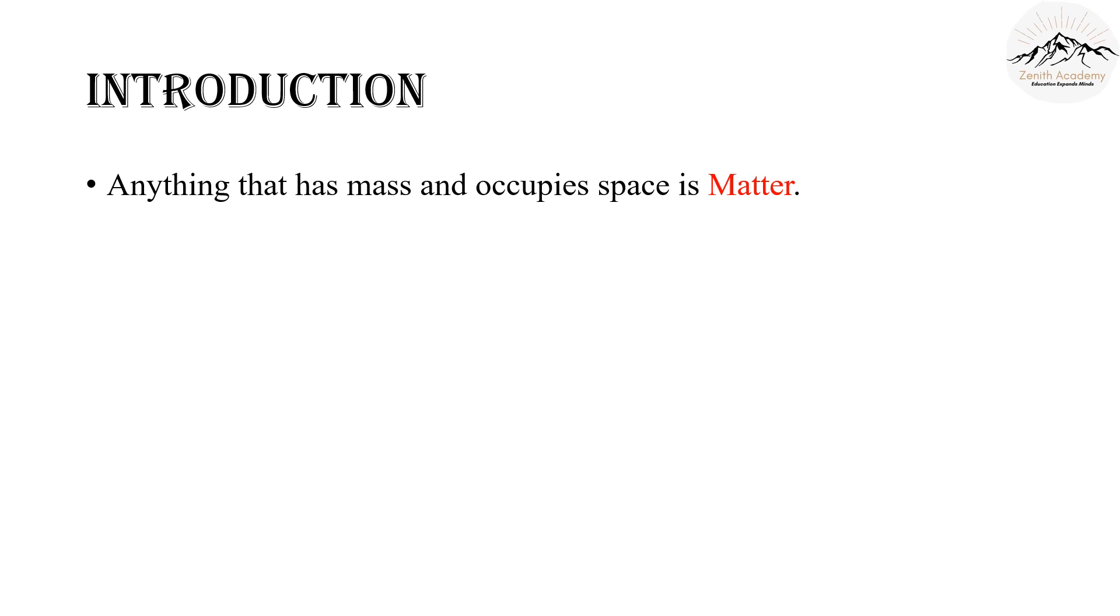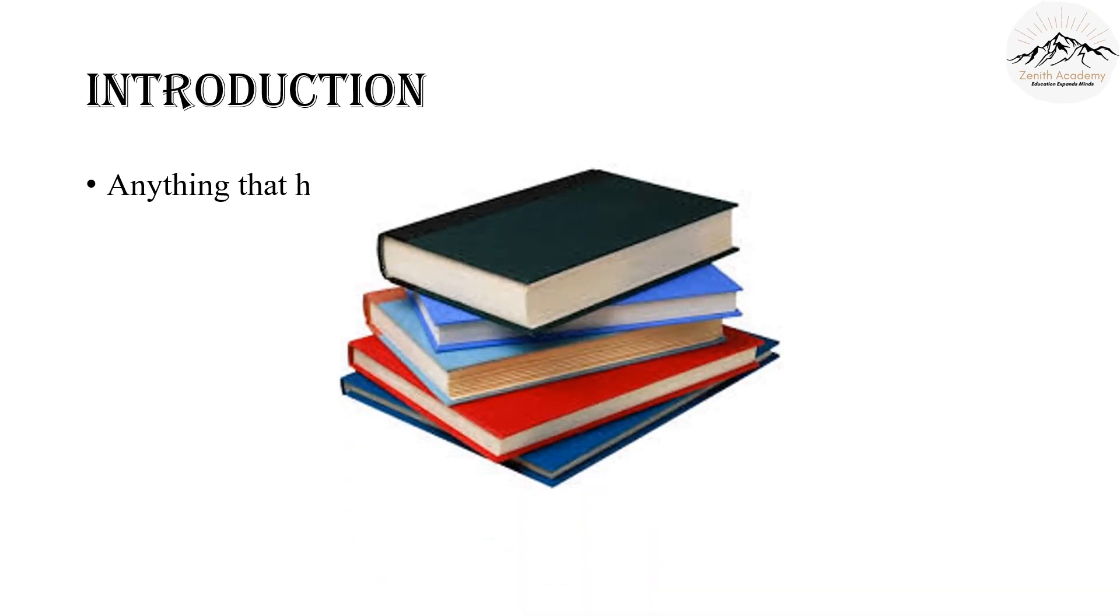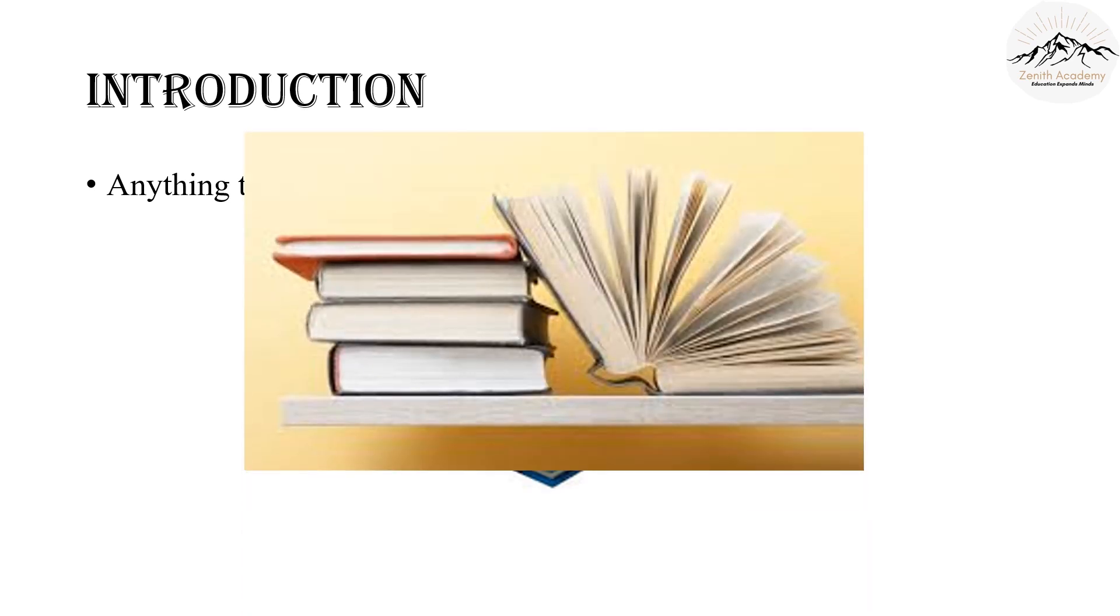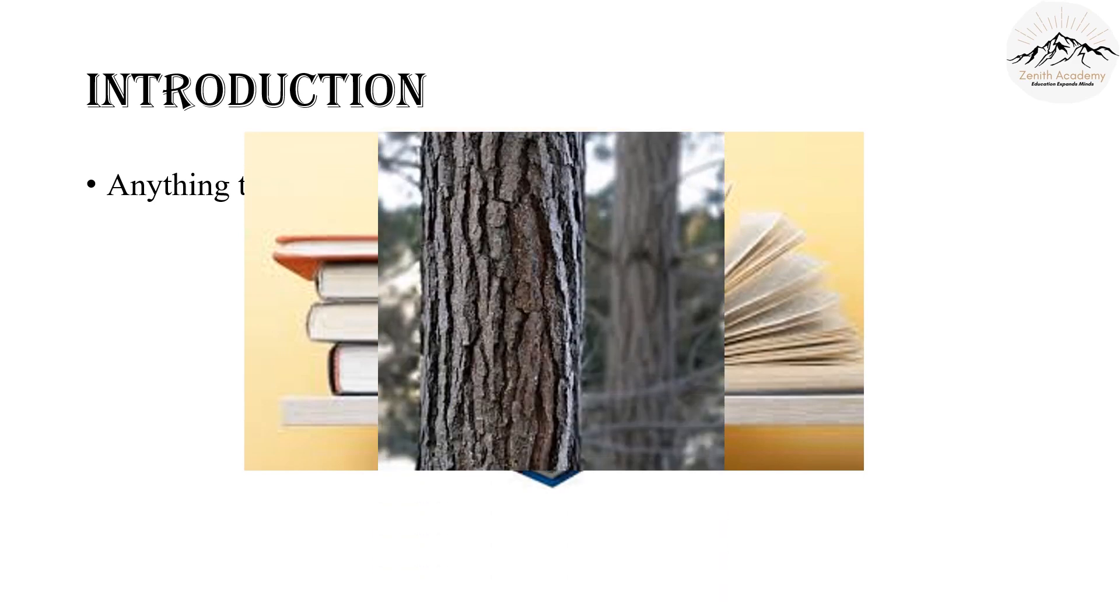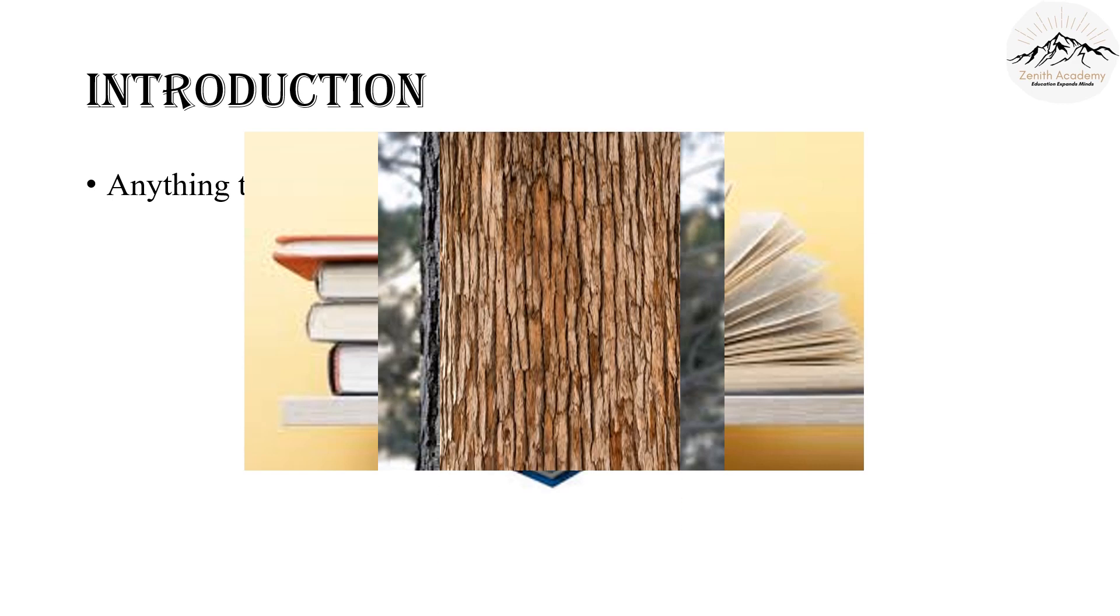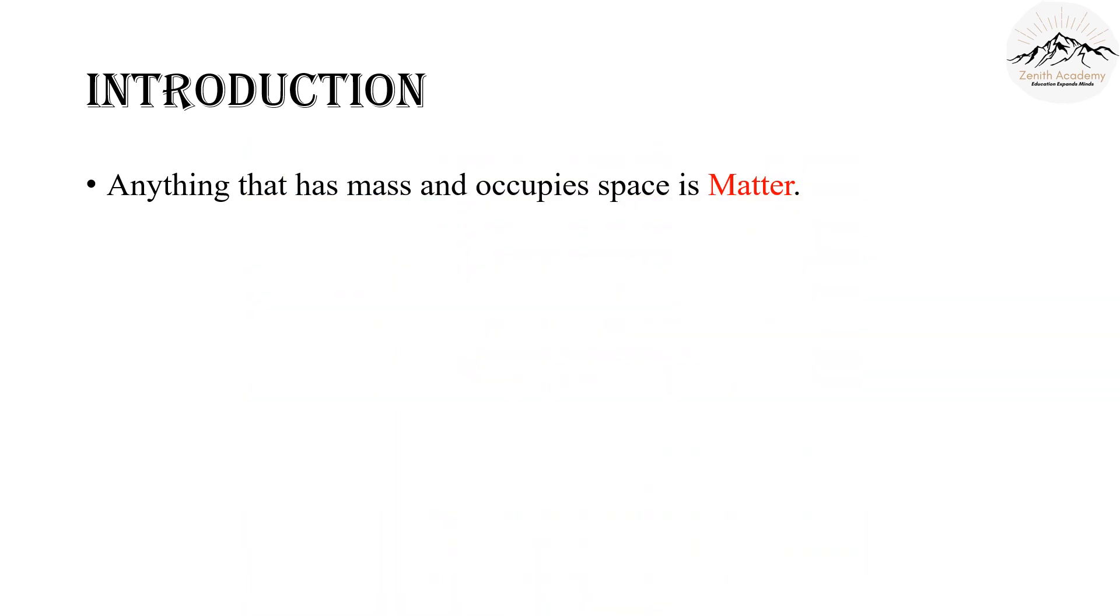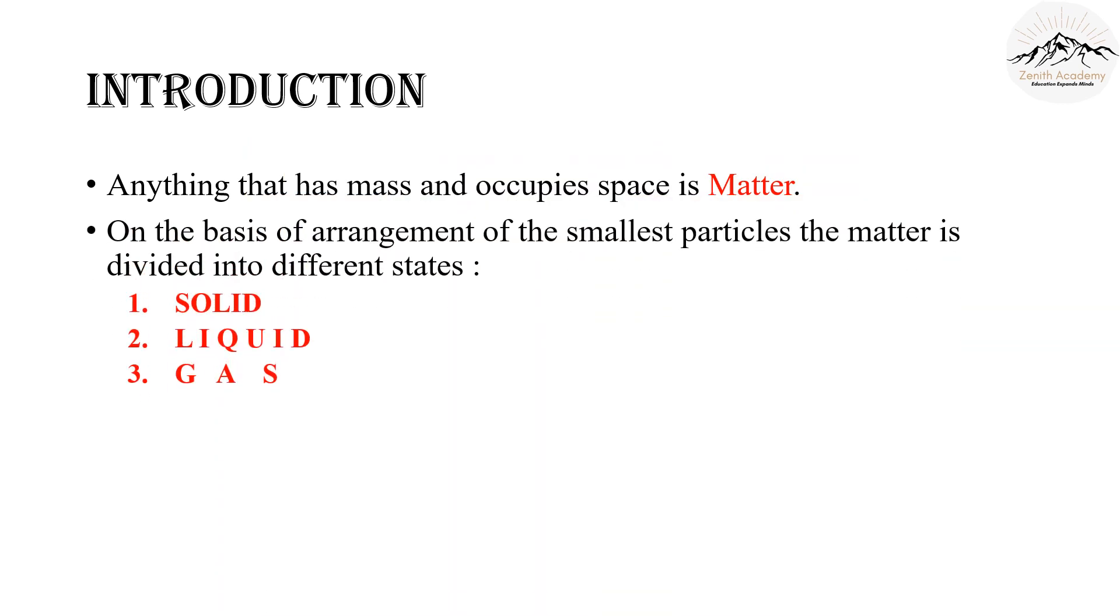But everything we know is made of something smaller. Example: your notebook is made of pages. The pages are made from the bark of a tree. A tree also has smaller particles in it that make it up. The bark can be broken into such smaller parts that you can't even see it with your naked eyes. And these small particles have certain arrangement. Based on this arrangement, they can be classified into different states: solid, liquid and gas.